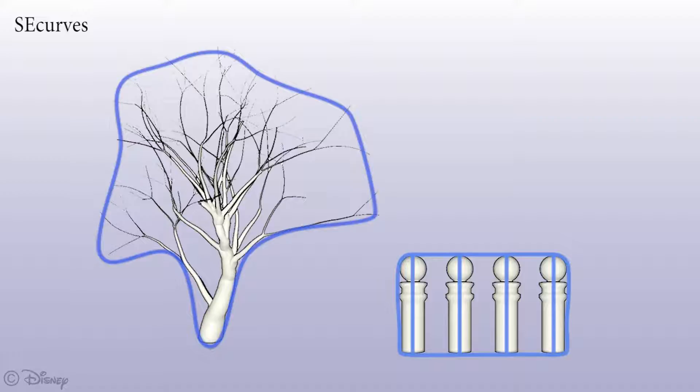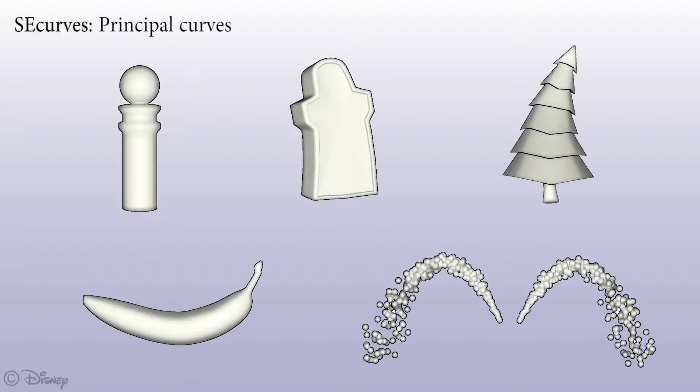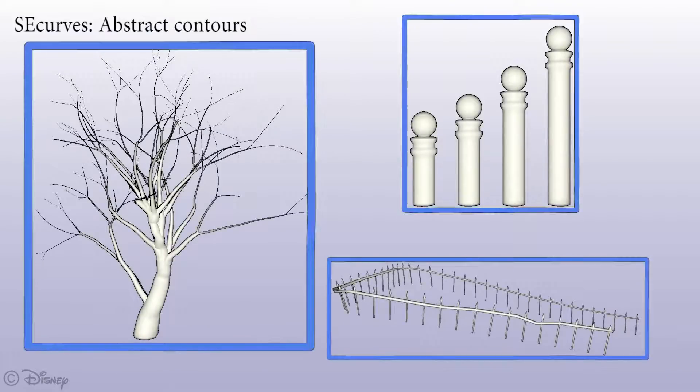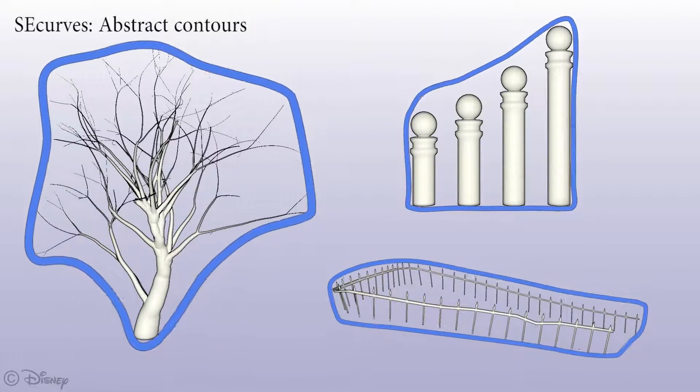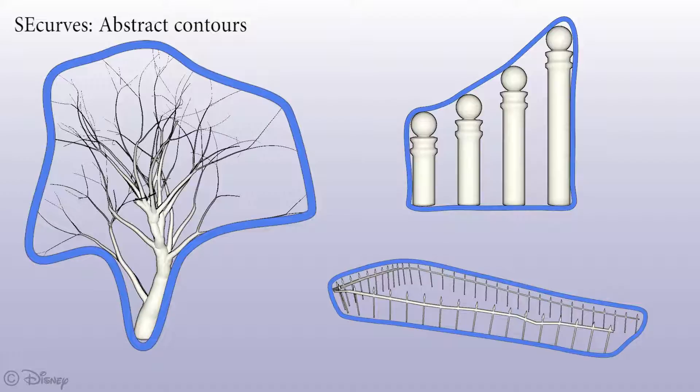We propose a method to compute two types of C curves that span a wide range of cases. The first type are skeletal principle curves which approximate the shape of thin objects. The second type of C curves are abstract contours which join the tips and edges of complex shapes or groups of objects.